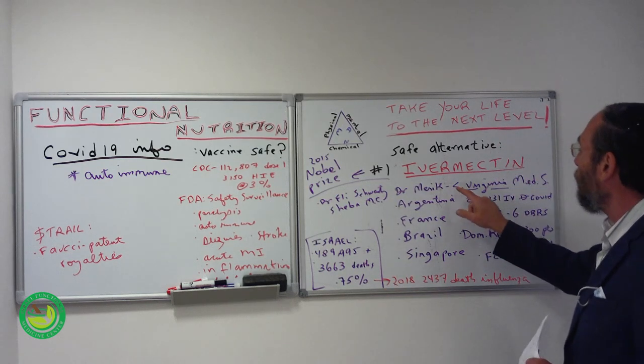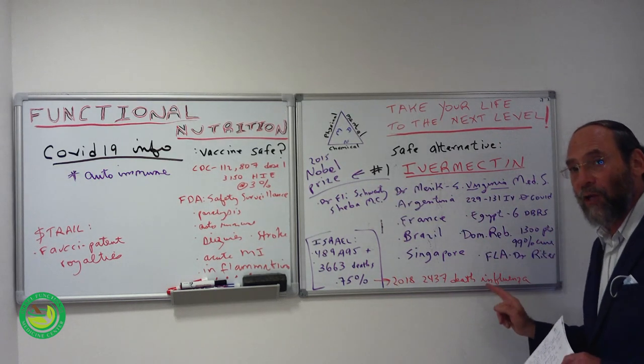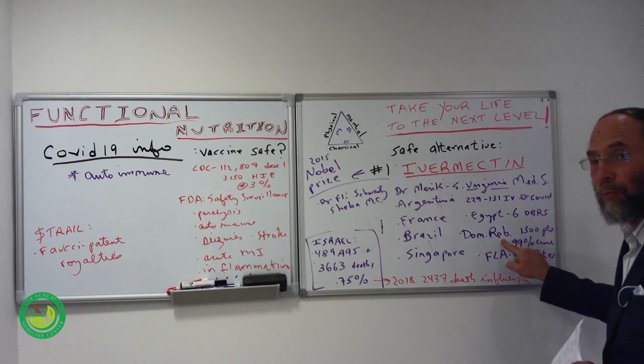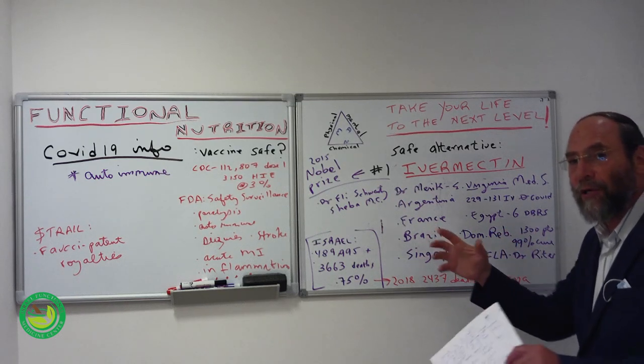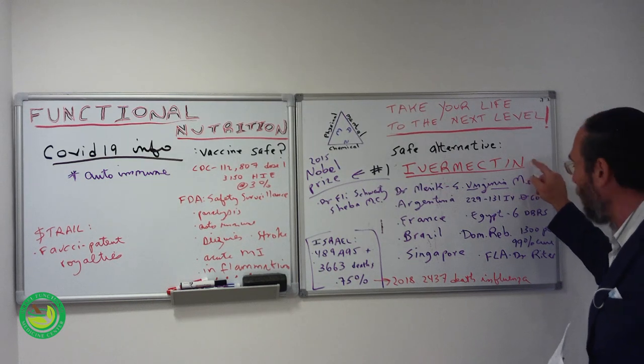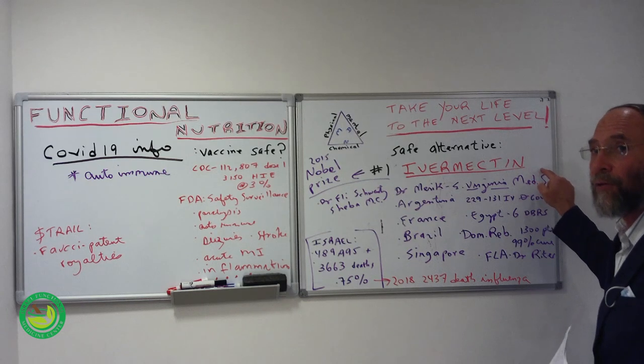But it is used now in all these countries, Argentina, France, with randomized controlled studies. 1,300 patients in the Dominican Republic, where there are three hospitals and several clinics who all use ivermectin for COVID-19 patients with a 99% cure rate.